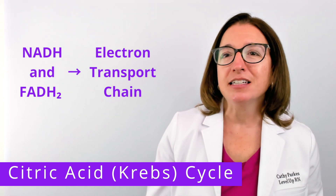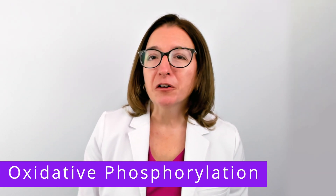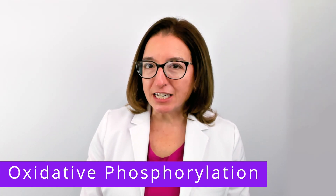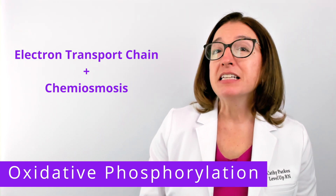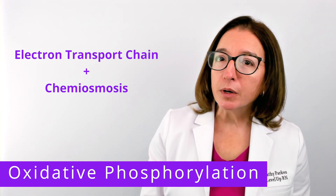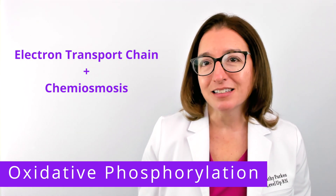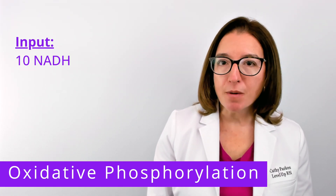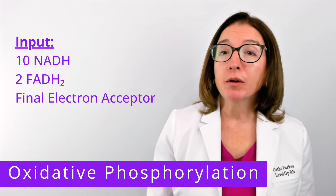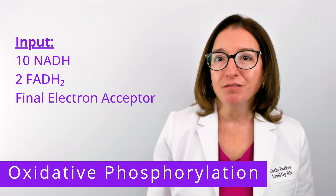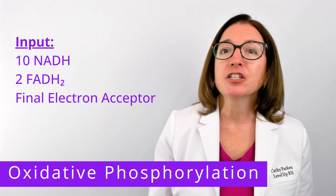The NADH and FADH2 molecules will go on to the electron transport chain, which we will be talking about next. The last part of cellular respiration is oxidative phosphorylation, which is composed of two processes: the electron transport chain and chemiosmosis. Oxidative phosphorylation occurs along the inner membrane of the mitochondrion for eukaryotic cells and along the plasma membrane for prokaryotic cells. The input to this process is 10 NADH molecules, two FADH2 molecules, and a final electron acceptor. In aerobic respiration, the final electron acceptor will be oxygen. In anaerobic respiration, the final electron acceptor will be a substance other than oxygen, such as nitrate or sulfate.